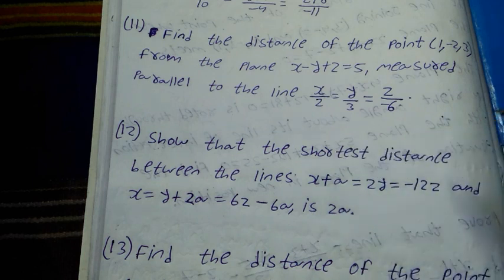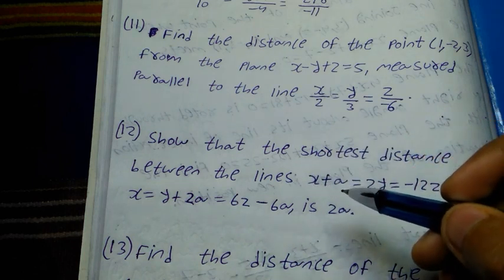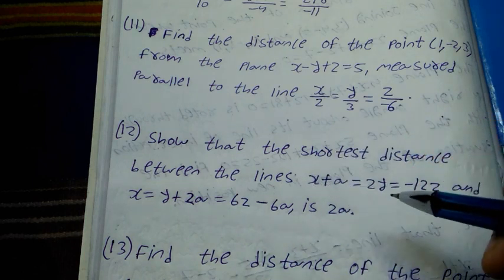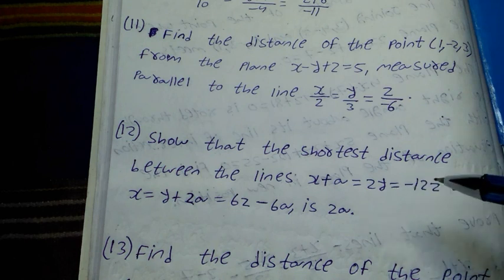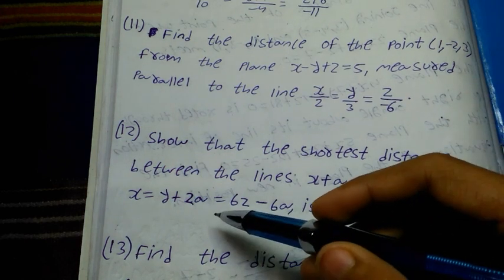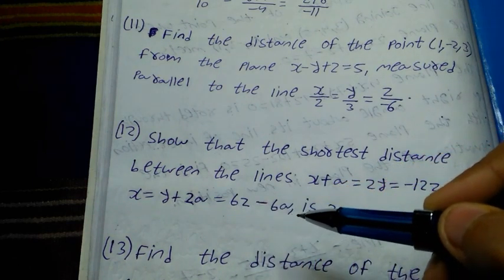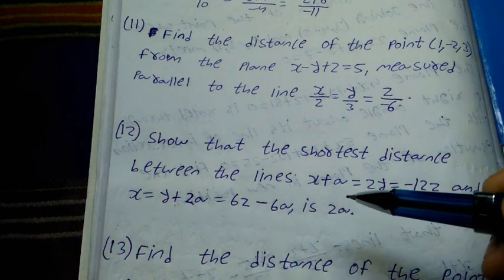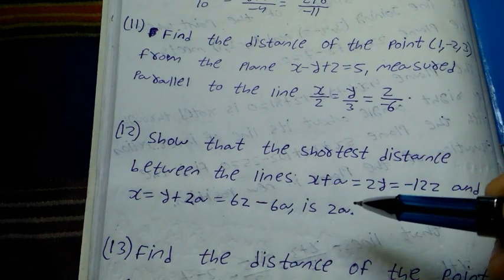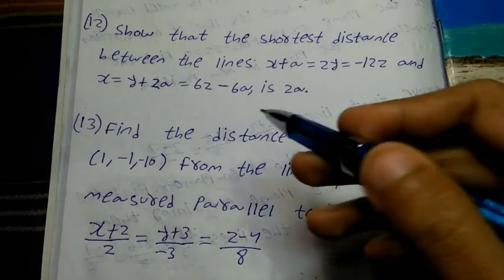Number 12 question: show that the shortest distance between the lines x plus a equal to 2y equal to 12z and x equal to y plus 2a equal to 6z minus 6a is 2a.